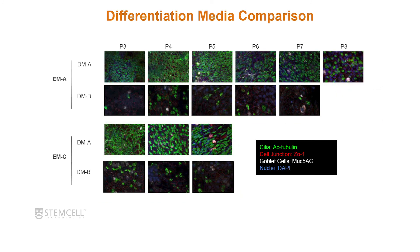Also examining different markers — acetylated tubulin for cilia, ZO1 for tight junctions, MUC5AC for goblet cells, and DAPI for nuclei — you can see that with increasing passage, fewer ciliated cells are present. Comparing media A to media B, there is a clear difference in the number of ciliated cells and some goblet cells visible. Depending on your model system, you can adjust and explore different vendors to find what works best.